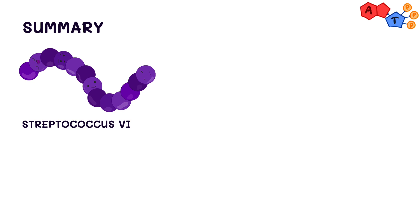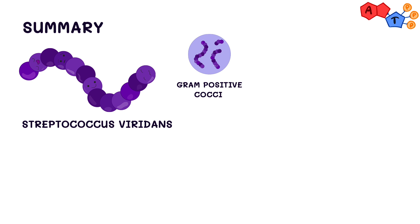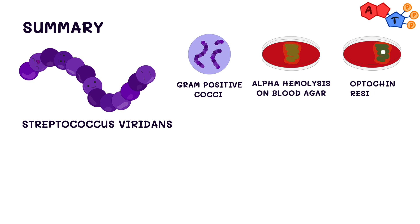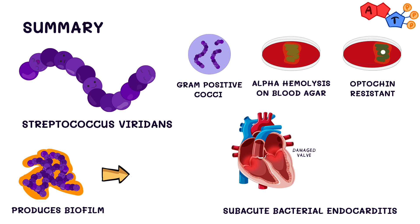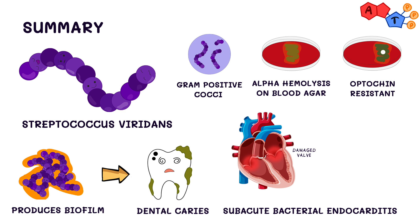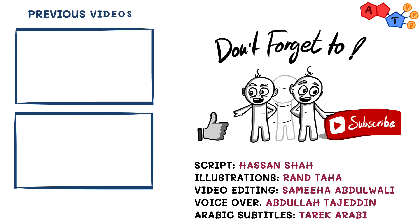To sum up, today we talked about Streptococcus viridans. It's a gram-positive, alpha-hemolytic bug; it is optochin resistant and can produce a biofilm. The main things you need to know are that it can cause subacute bacterial endocarditis and dental caries, and we treat it with penicillin or ceftriaxone. And that's it for Streptococcus viridans — we hope you found it beneficial. Don't forget to like, share, and subscribe to receive our latest videos, and as always, thanks for watching.